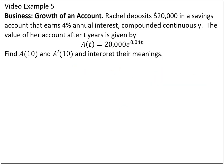For video example 5, we have the growth of a business account. Rachel is depositing $20,000 in a savings account earning 4% annual interest compounded continuously. The value after t years is given by an exponential function. Finding a of 10 — how much will her account be worth in 10 years — using a calculator gives $29,836.49.